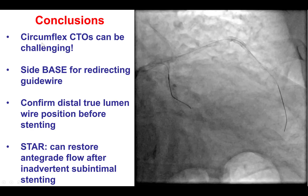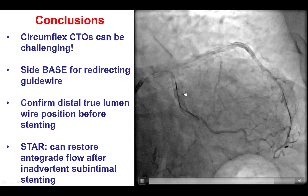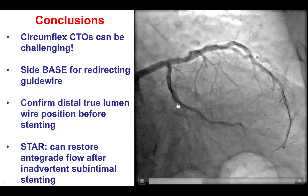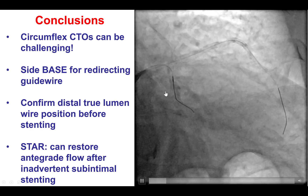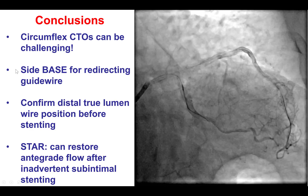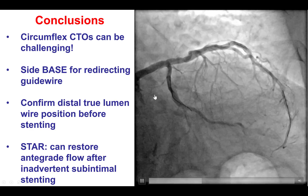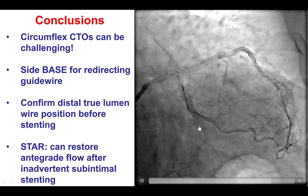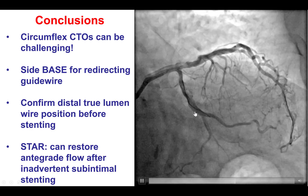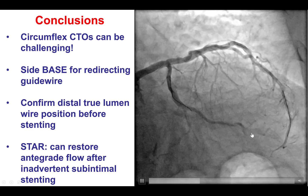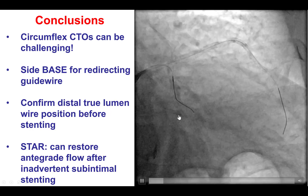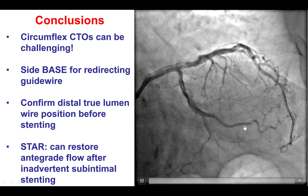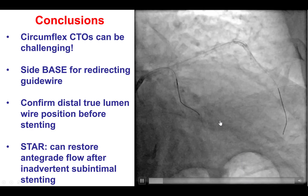Multiple lessons from this case. First, circumflex CTOs can be challenging — there is often significant tortuosity that is not always easy to appreciate on the angiogram. Here, the wire entered into an inferior branch, and we used the side-base technique, essentially inflating a balloon halfway in, halfway out, and advancing another wire into the course of the vessel. We used the stick-and-swap technique and thought we were in the true lumen; we even transduced pressure through a microcatheter which appeared arterial — but in this case we were wrong and were still in the false lumen, or the extra-plaque location.